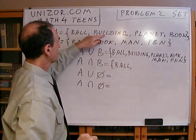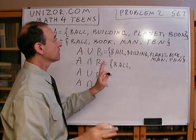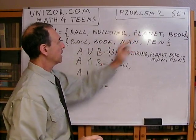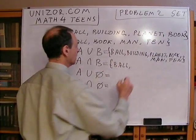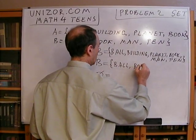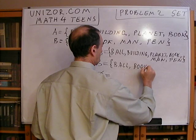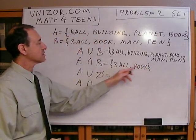Is the building common? Well, no, there is no building in B. So, building is not a common element. Planet? Neither. The book is actually the common element. So, the intersection contains only these two.